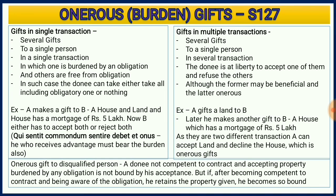Now let us understand gifts given under multiple transactions. The concept is similar but with one big change. In the previous example, A gifted both house and land to B at the same time. Here, A gives the house in the first transaction and the land in a second transaction. Now B can accept the land, which has no obligation, and decline the house, which has a mortgage — because these are two different transactions. B can accept only the transaction which is beneficial to him.